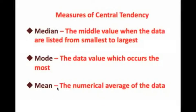And then the mean — the mean is the numerical average. In other words, what we will do with the mean is add all the values up and then divide by the number that we have. You'll hear things talk about the mean, median, and mode. It seems almost like it has a rhythmic value to it — the mean, median, and mode. The median is the middle value. The mode is the one which occurs the most. And the mean is the numerical average.